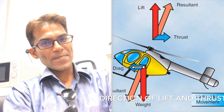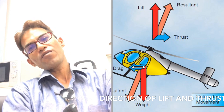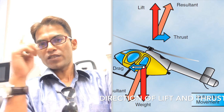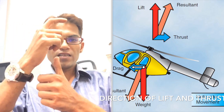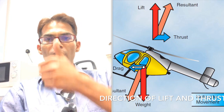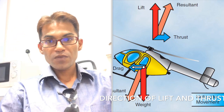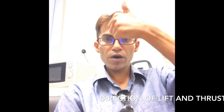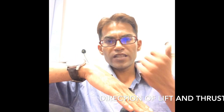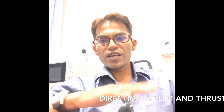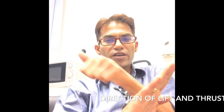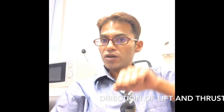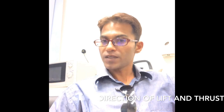We'll be looking into basic aerodynamics regarding helicopters. The first basic thing is the direction of lift and thrust in case of the helicopter. With the rotor moving and the engine making the helicopter go upward, the lift as well as the direction of thrust will be perpendicular to the plane of rotation of the rotor blade. Lift and thrust force will always be perpendicular to the plane of rotation.